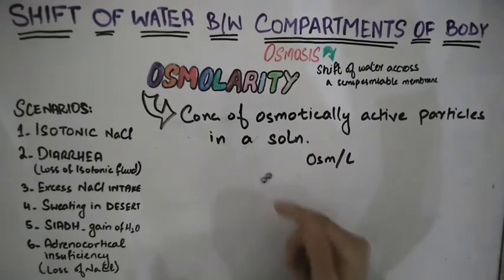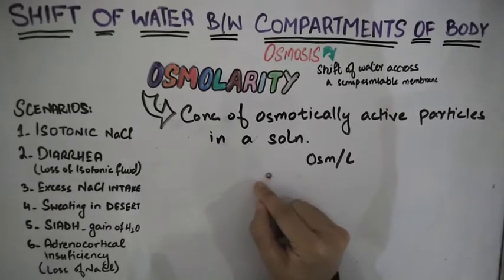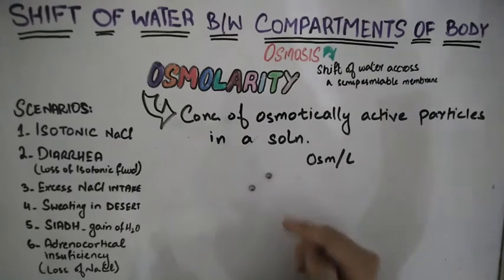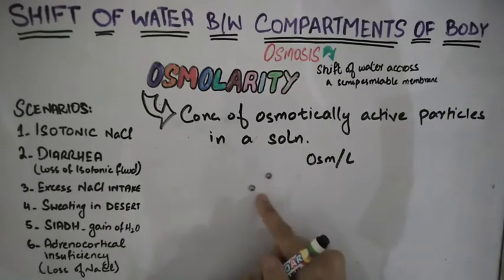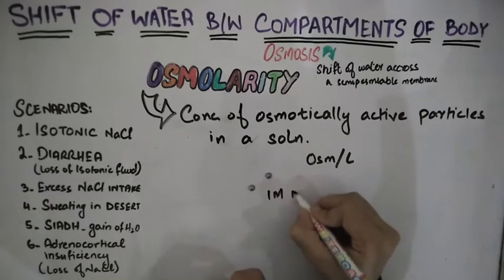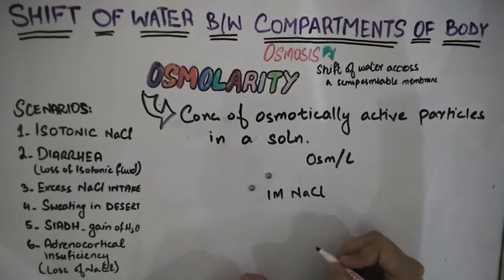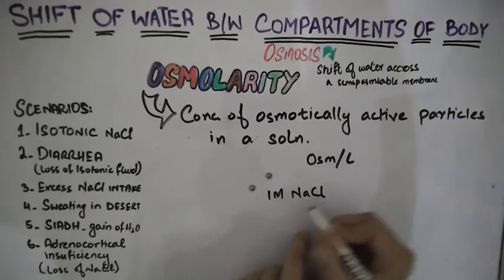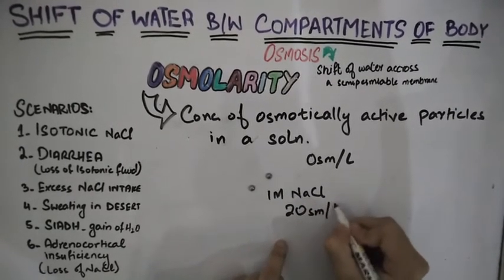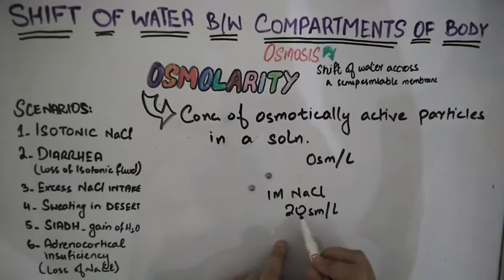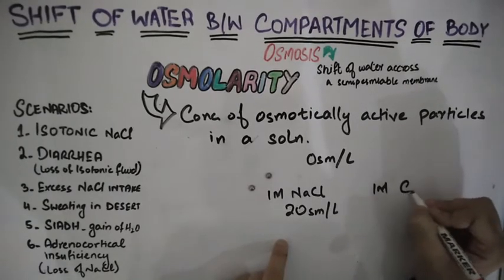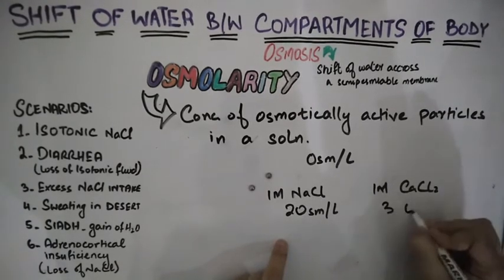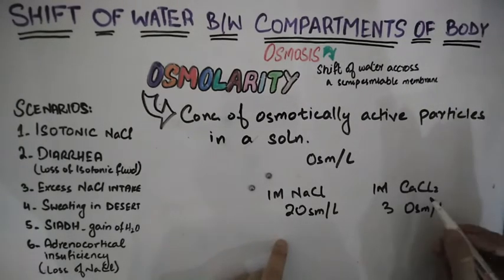When dissolved in water, the two atoms become ions: sodium ion and chloride ion. So one molecule of sodium chloride gives us two osmotically active particles. Therefore, a one molar solution of sodium chloride has an osmolarity of two osmoles per liter. Similarly, the osmolarity of a one molar solution of calcium chloride is three osmoles per liter, because one molecule of calcium chloride gives three osmotically active particles: one calcium ion and two chloride ions.